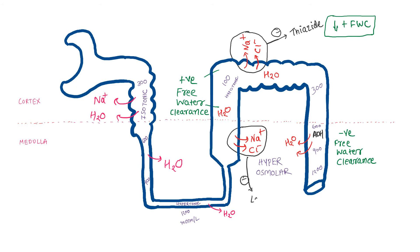There is no effect of thiazide diuretics on negative free water clearance. While loop diuretics, which act on the thick ascending limb of the loop of Henle and inhibit solute reabsorption, also decrease positive free water clearance. Additionally, loop diuretics decrease the hyperosmolarity of the medulla, and thereby less water will be reabsorbed from the collecting ducts — so negative free water clearance will also be decreased with loop diuretics.